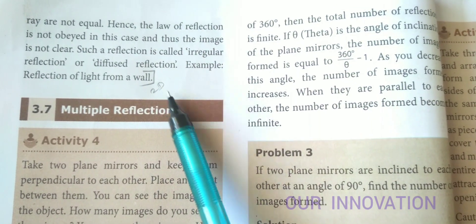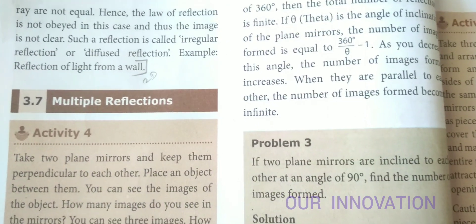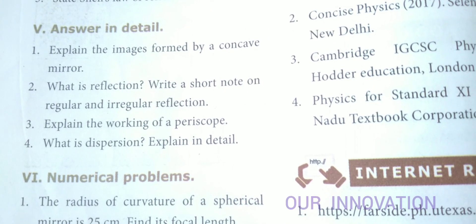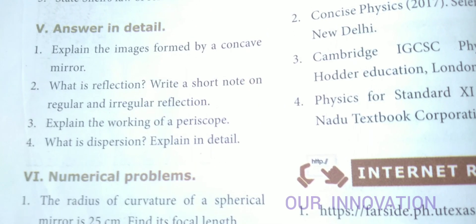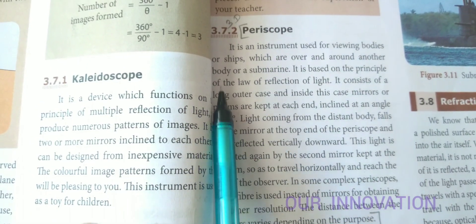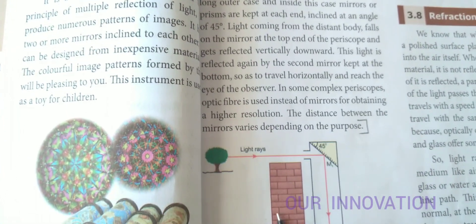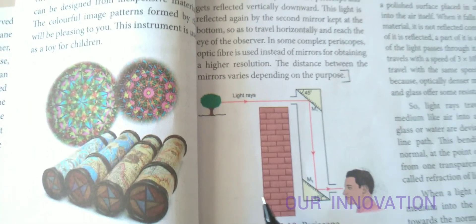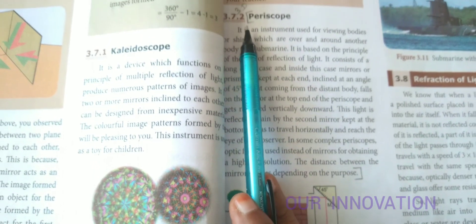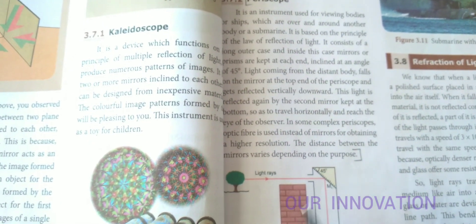Explain the working of periscope. Page number 29, under the heading periscope. You have to write this whole paragraph along with this diagram. In the diagram, you have to draw up to here. This is the third detail. Mark it from here until end of this along with this diagram.